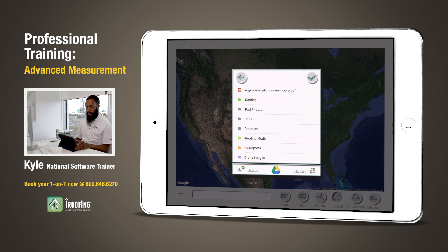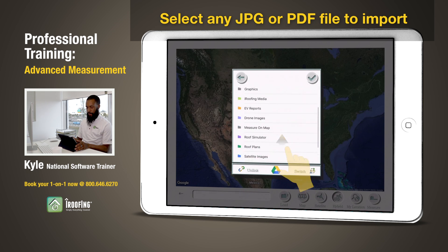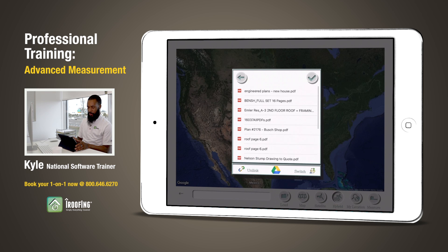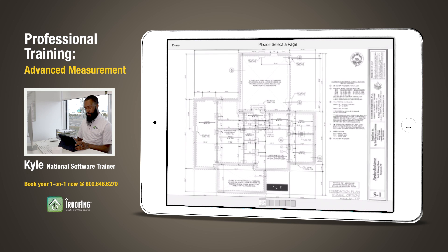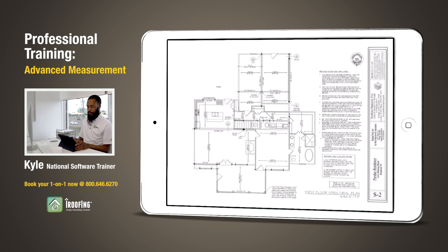Once I'm in my Google Drive account I can now choose any PDF document I have for a blueprint or any JPEG photo for a drone photo. If I go to my roof plans folder and select one of my blueprints, it will load a preview of that document. If it's a multiple-page document I can then select which page I'd like to measure from.